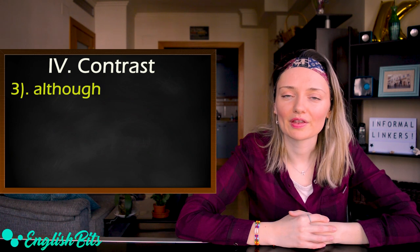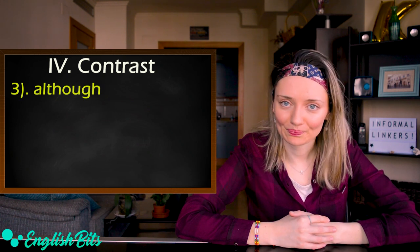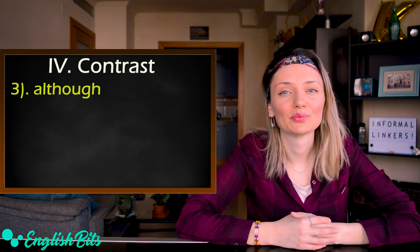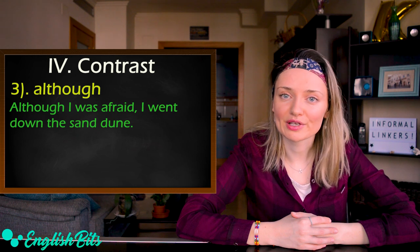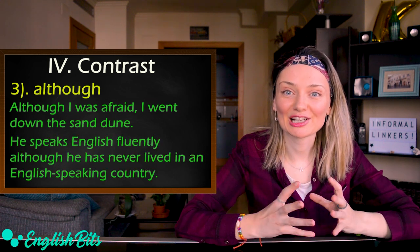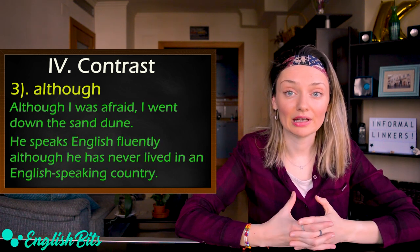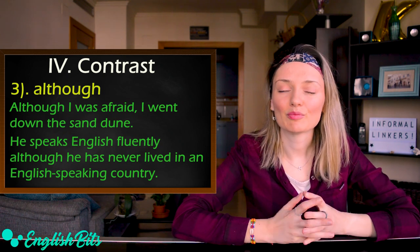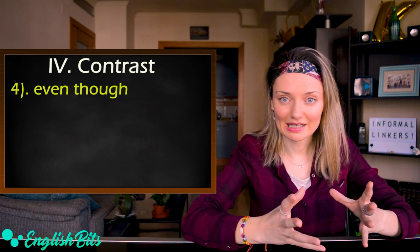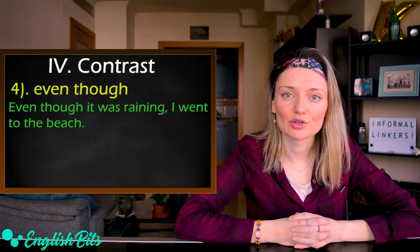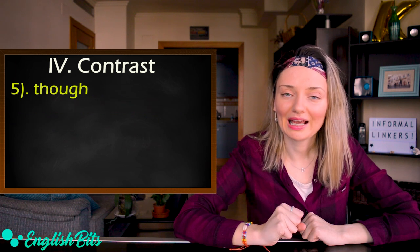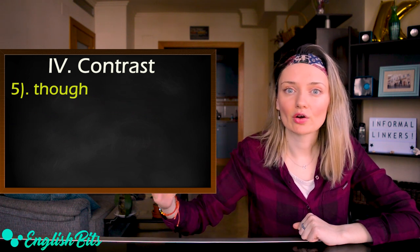Next: 'although' — the stress goes at the end: although. It can go at the beginning or in the middle of a sentence — for example: although I was afraid, I went down the sand dune. And: he speaks English fluently, although he has never lived in an English-speaking country. Number four: 'even though,' which is the same as although but more emphatic — for example: even though it was raining, I went to the beach. Number five: the linker 'though,' which can go in the middle or at the end of a sentence — for example: I had a good time, though it rained.